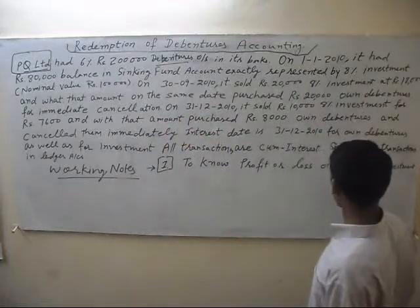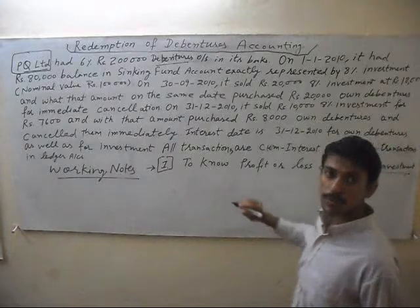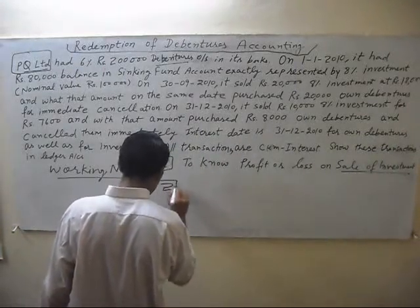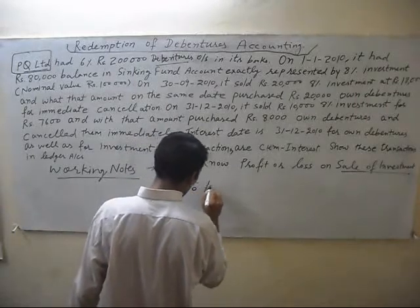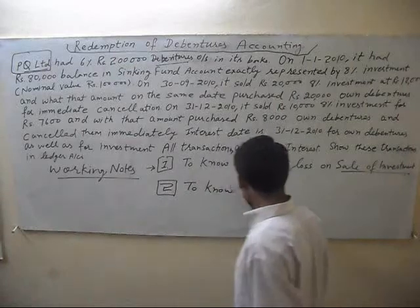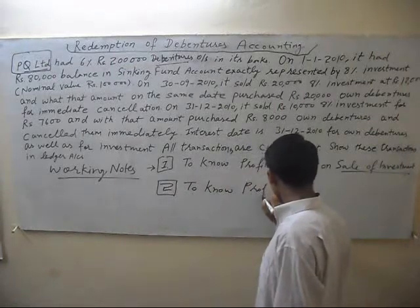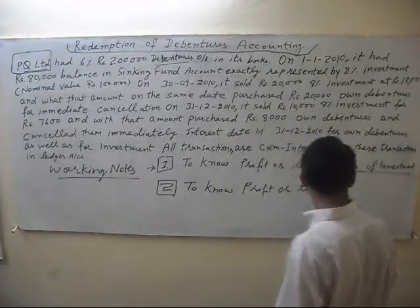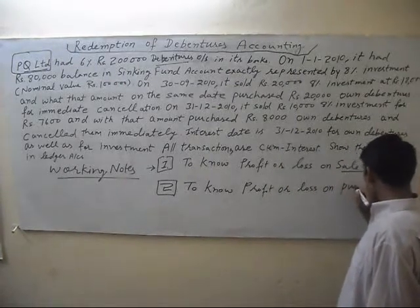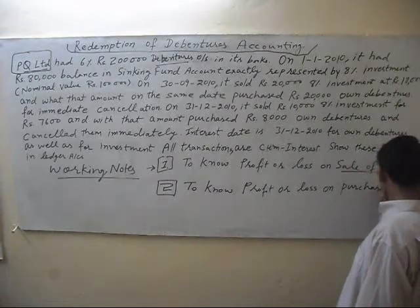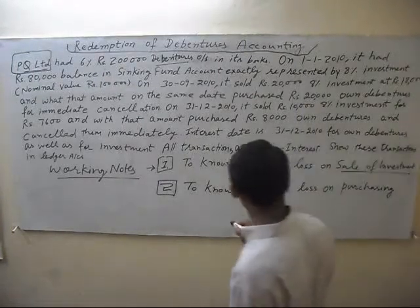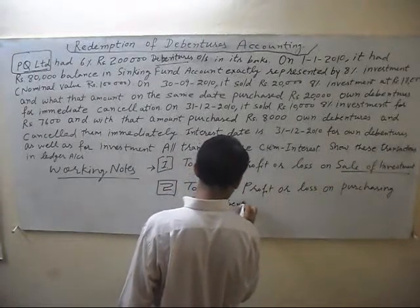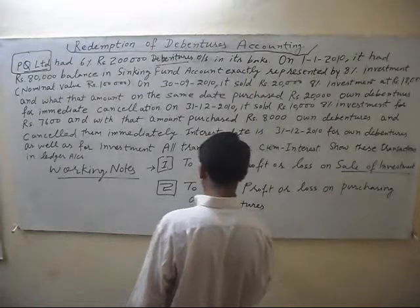The second working note is profit or loss on purchasing of debentures, and the third working note is interest on investment.